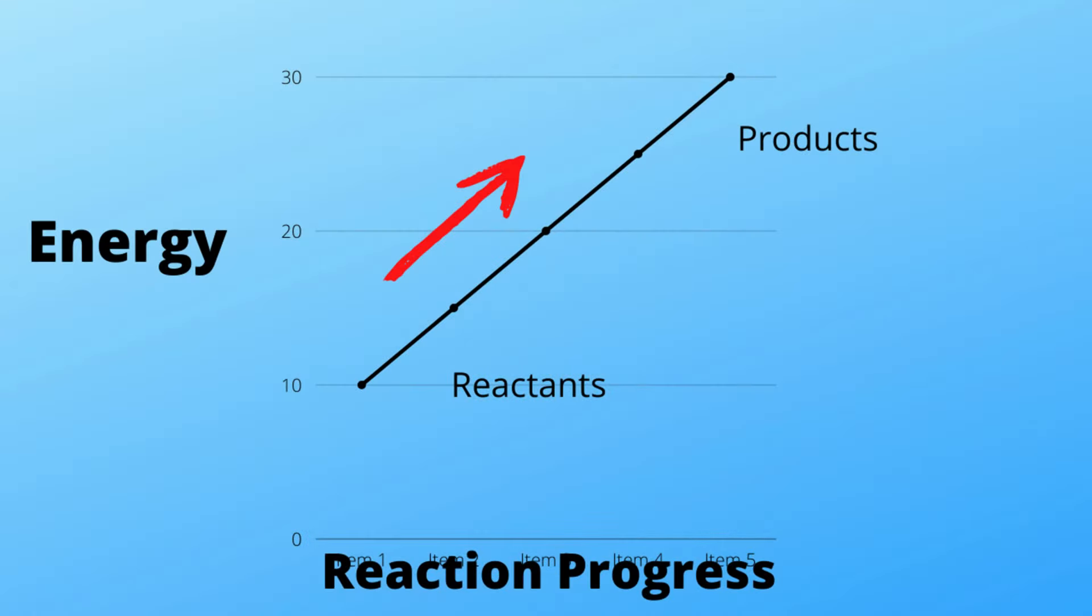An endothermic reaction can be thought of as an uphill reaction because the reactants have less energy than the product. Reactants need heat or energy for the reaction to occur from the surroundings.